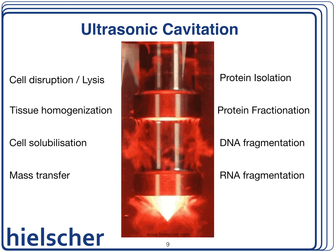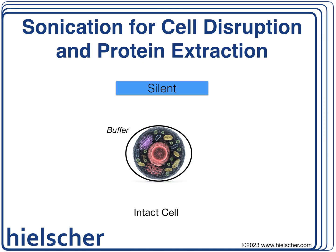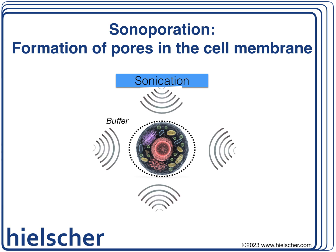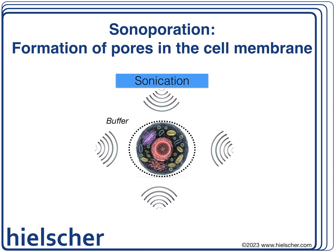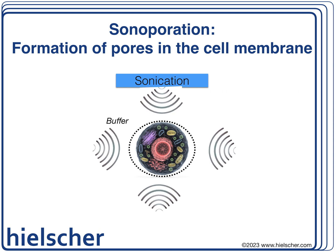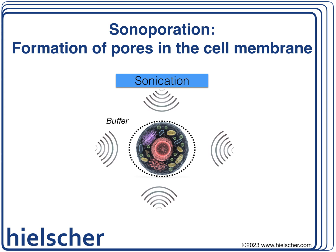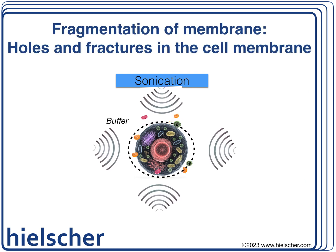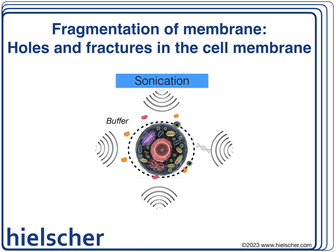In this slide, we see a single cell in a buffer solution under silent condition, meaning no sonication applied. When we sonicate the cell suspension, first sonoporation occurs — ultrasonic cavitation starts to perforate the cell membrane, so that small holes appear. Under continued ultrasound energy, these perforation holes get bigger and the cell membrane gets fragmented. At this point, small biomolecules can already leave the cell interior.